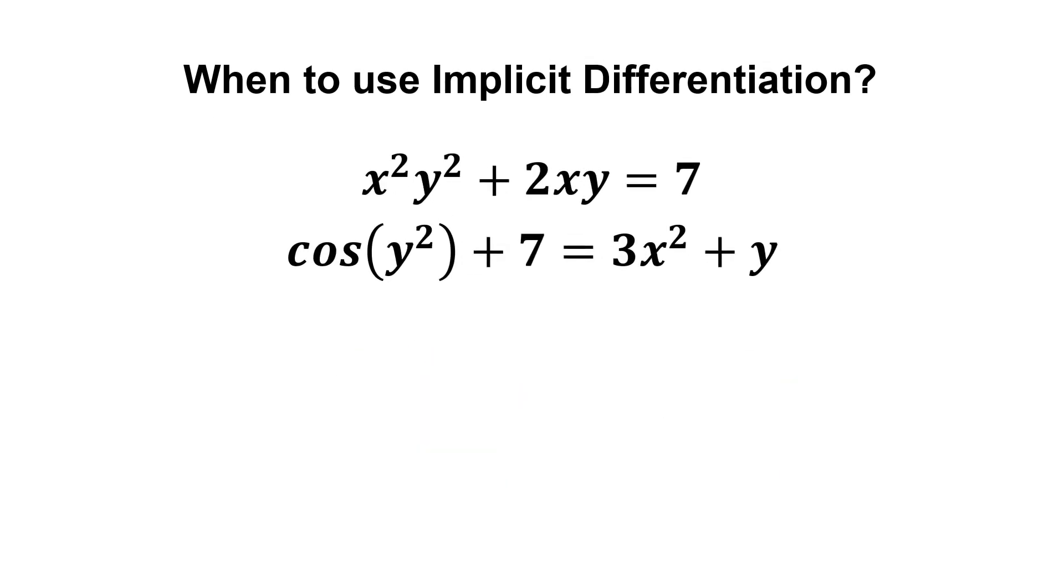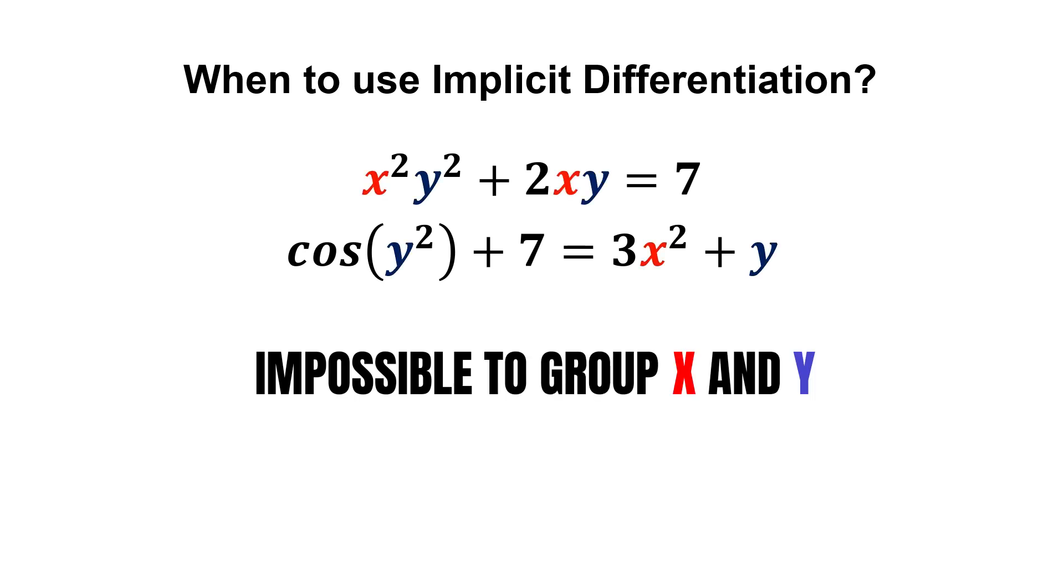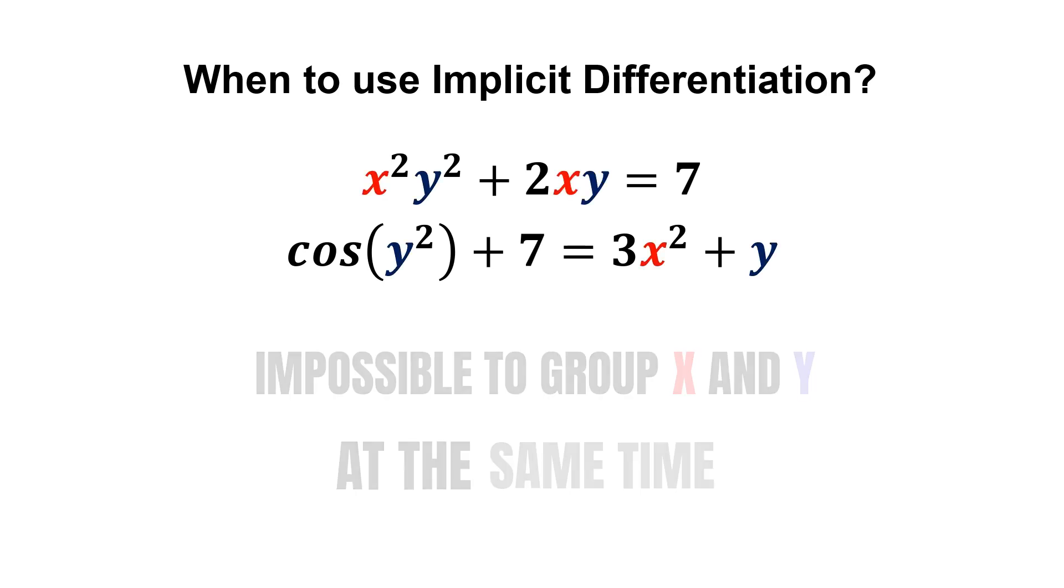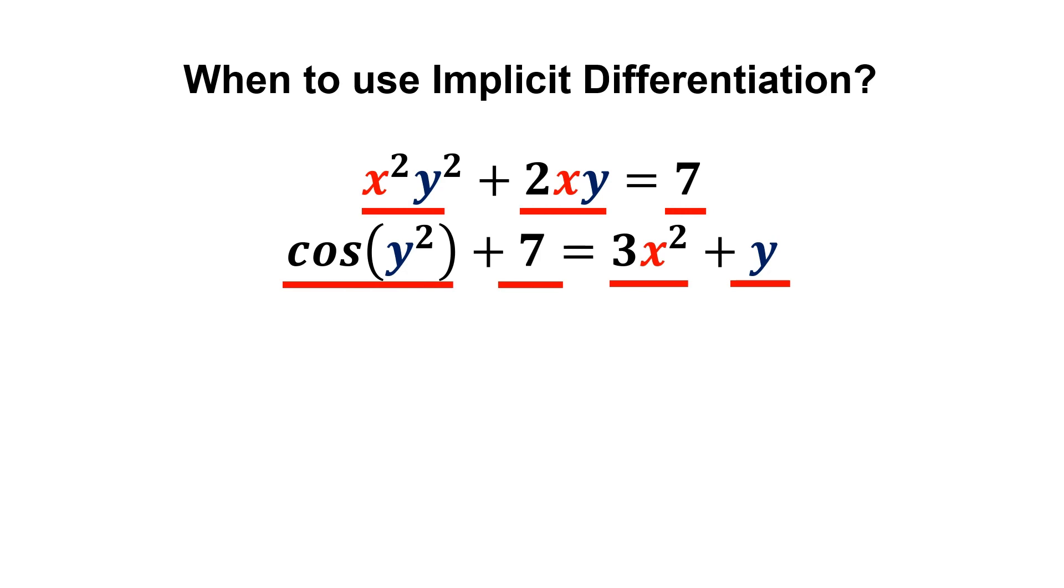However, for these equations, it is impossible for us to group all the y and x at the same time. Therefore, we differentiate it implicitly on every single term.